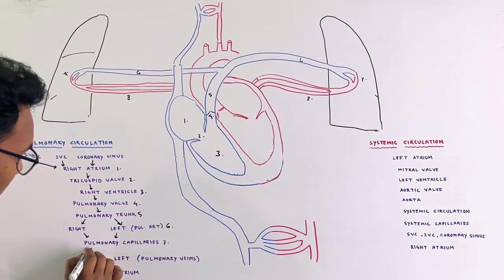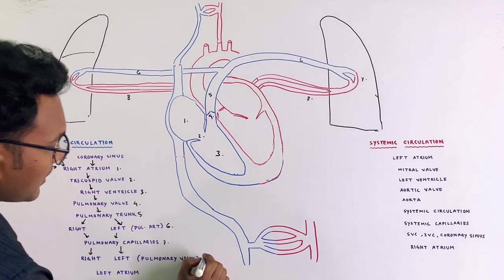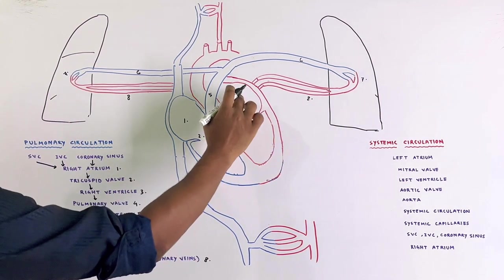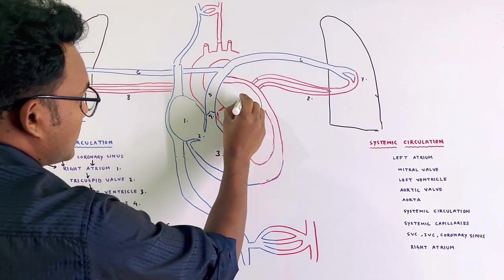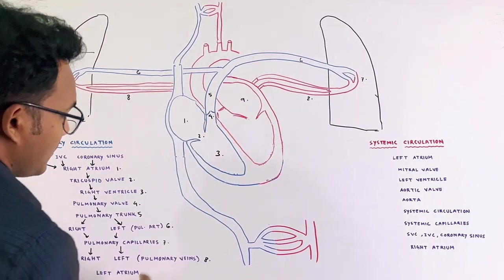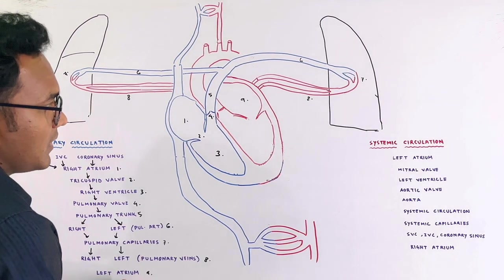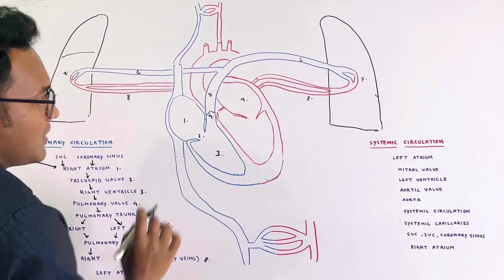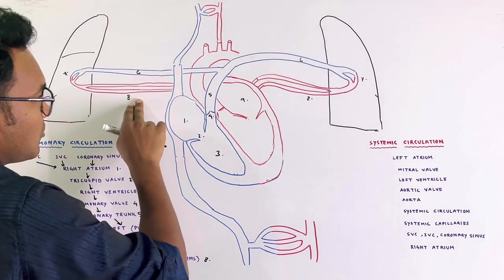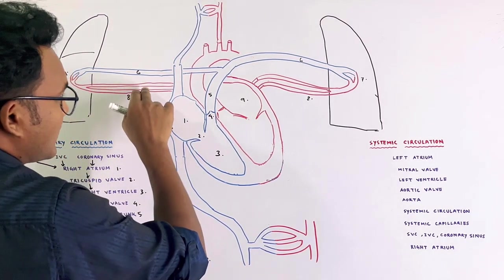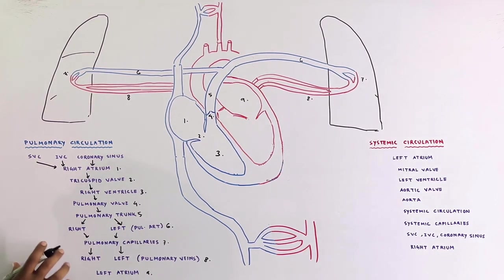The pulmonary veins — right and left pulmonary veins — carry blood back to the heart. Unlike regular veins which carry deoxygenated blood, the pulmonary veins carry oxygenated blood. This blood drains into the left atrium, which is point number 9 in the diagram. This completes the pulmonary circulation.